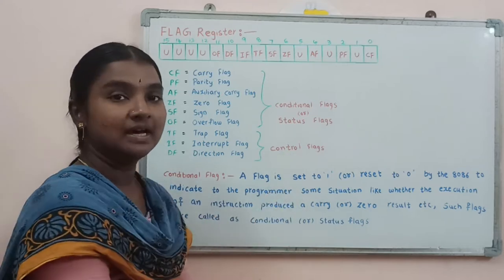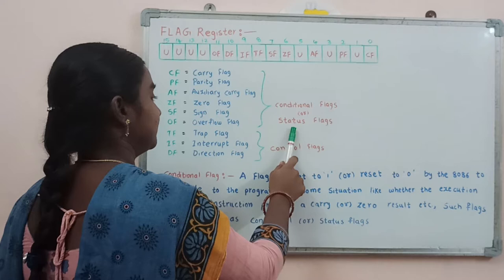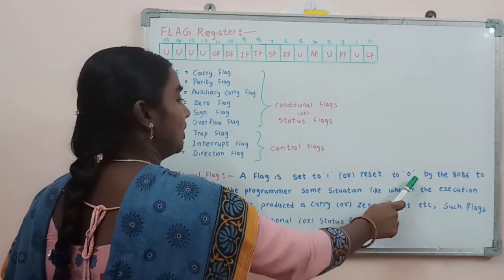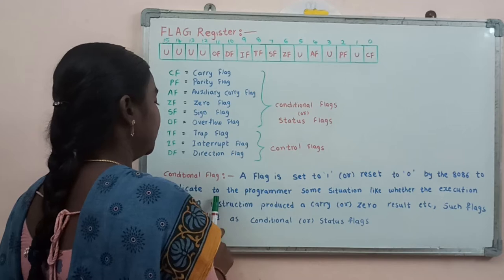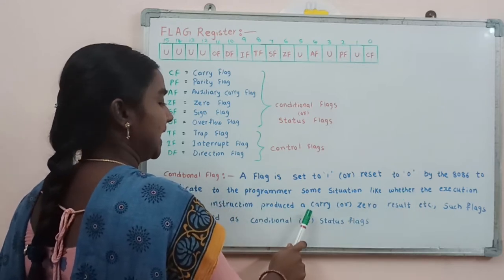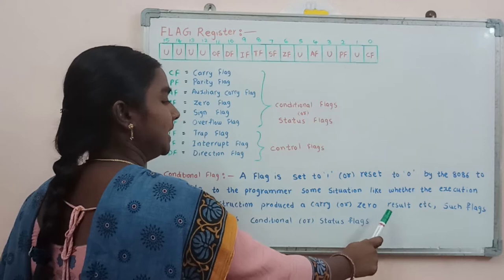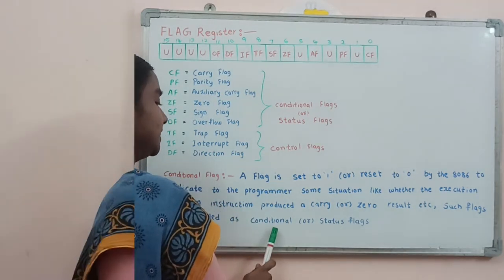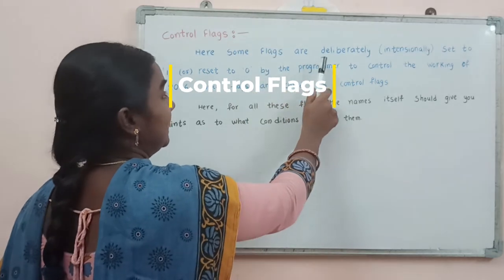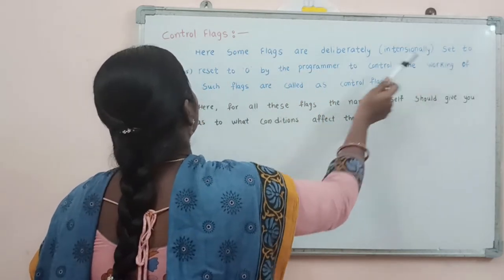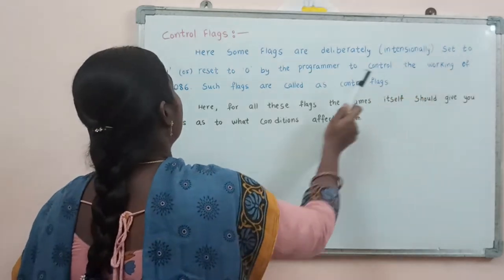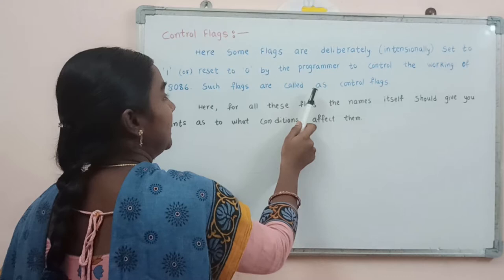A flag is set to 1 or reset to 0 by the 8086 to indicate to the programmer some situation — like whether the execution of an instruction produced a carry or zero result. Such flags are called conditional flags. Some flags are deliberately or intentionally set to 1 or reset to 0 by the programmer to control the working of the 8086. Such flags are called control flags.